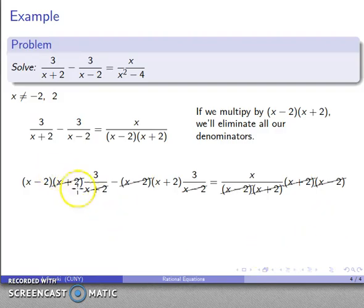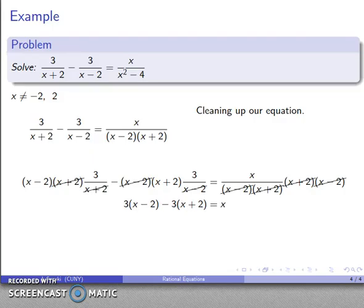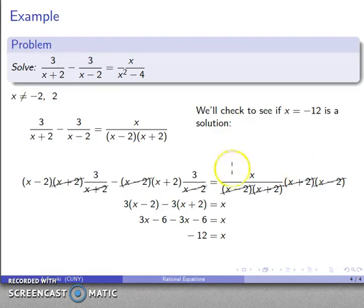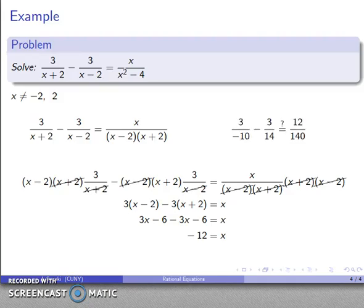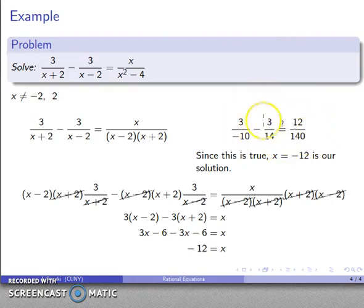I'll do the cancellation that I can. x plus 2 cancels here. x minus 2 cancels here. And everything cancels here. And after all the dust settles, I have 3x minus 2 minus 3x plus 2 equals x. And I'll expand and simplify. And there's a potential solution. It's not one of the forbidden values, so I'm good on that. And I should check to make sure that x equals negative 12 is, in fact, a solution. And they'll verify that if I drop x equals negative 12 into here, I end up with 3 over negative 10, 3 over 14. And this is actually a true statement. So x equals negative 12 is going to be our solution.